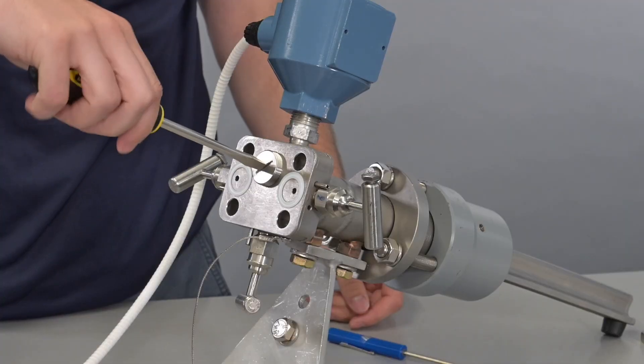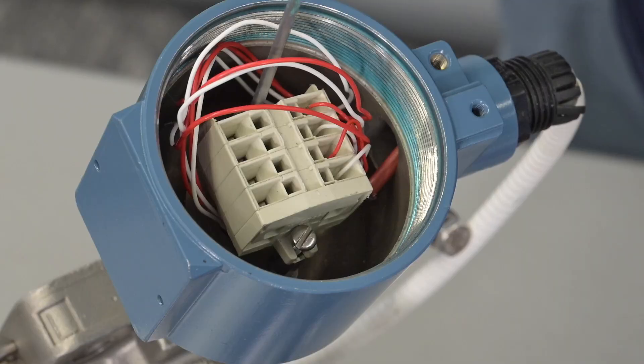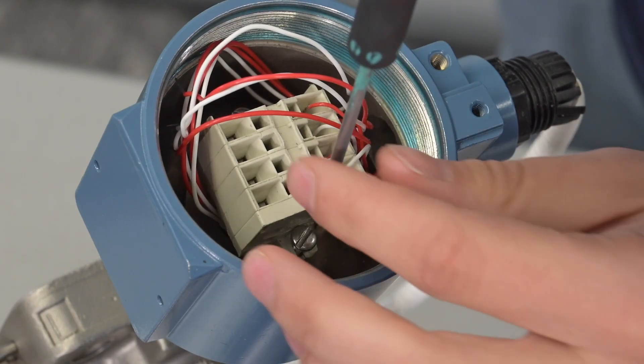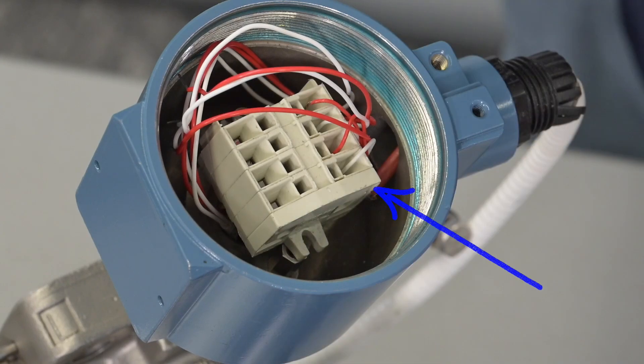Using a large screwdriver, remove the plug from the anubar to expose the RTD wires. Remove the terminal block from the RTD housing by unscrewing the two connection screws. Make sure you keep the wires on the one side of the terminal block connected.